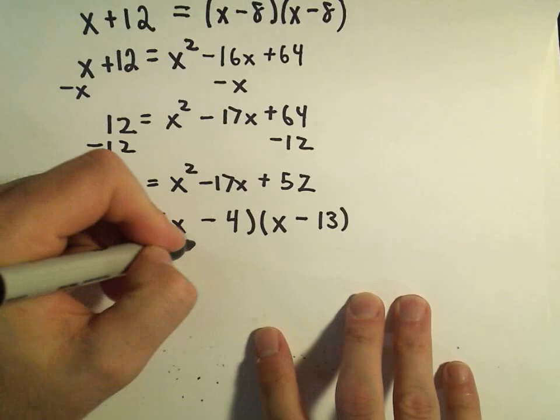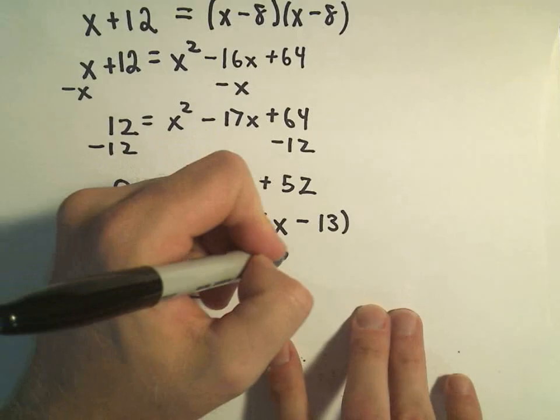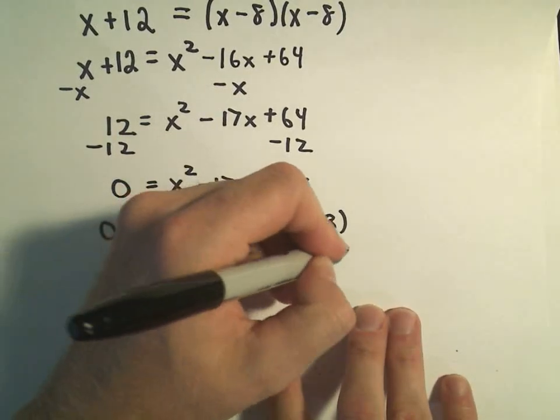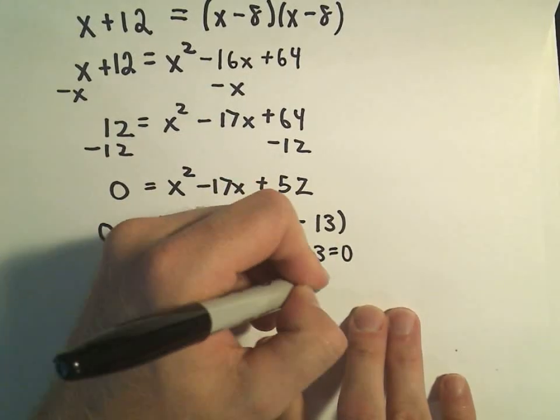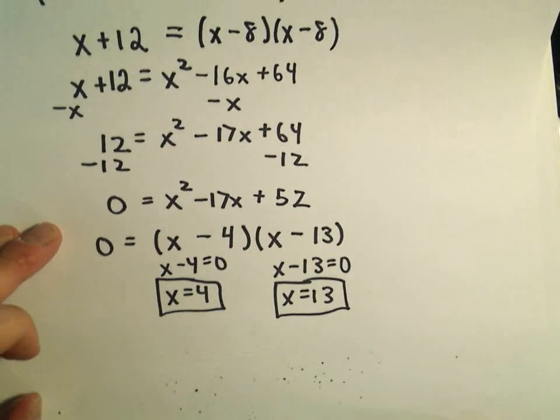So if we set x minus 4 equal to 0, we can add 4 to both sides and get x equals 4. On the other, x minus 13 equals 0. Add 13 to both sides. And we'll get another, I should say, potential solution.